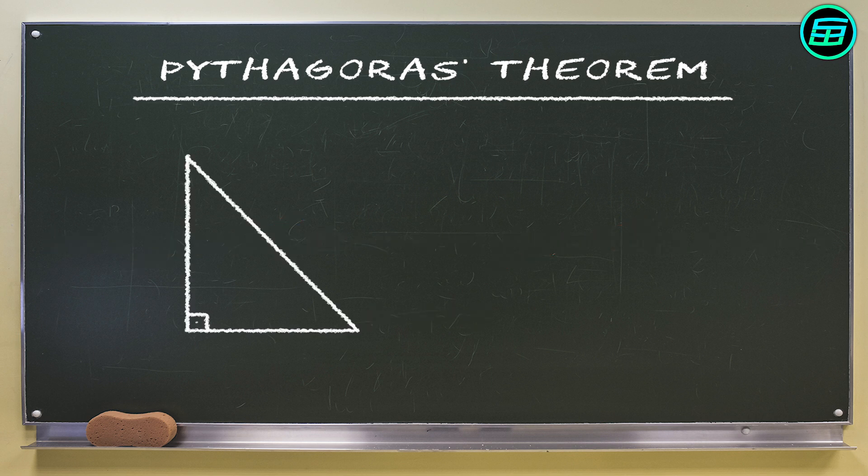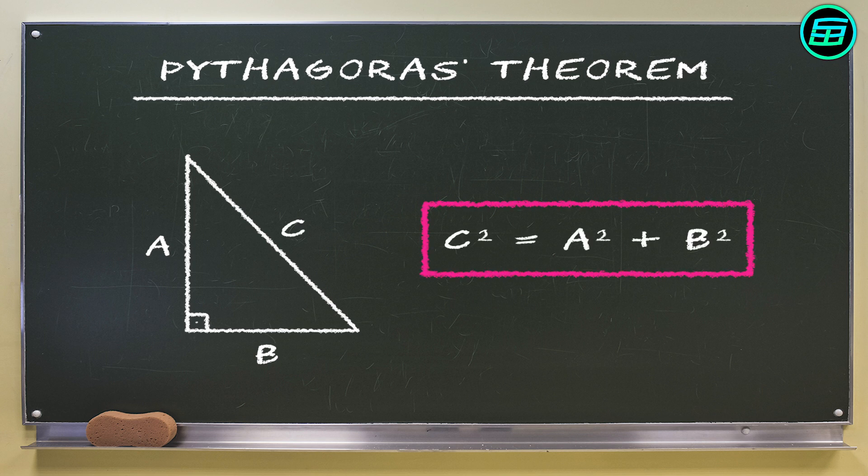And there we have it. In a right triangle, the square of the hypotenuse equals the sum of the squares of the other two sides.